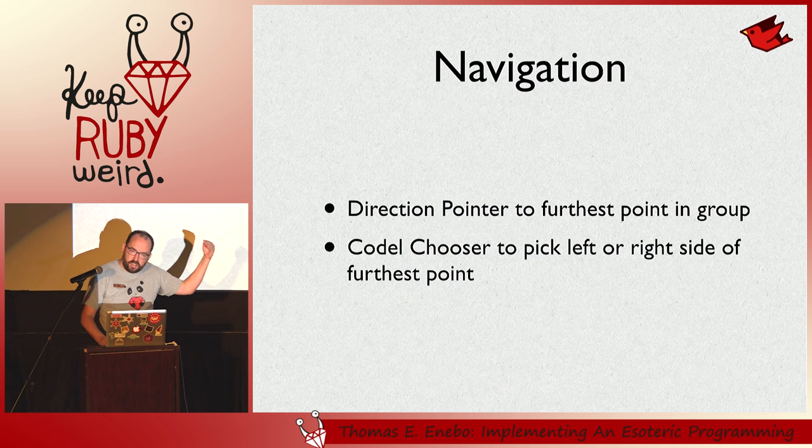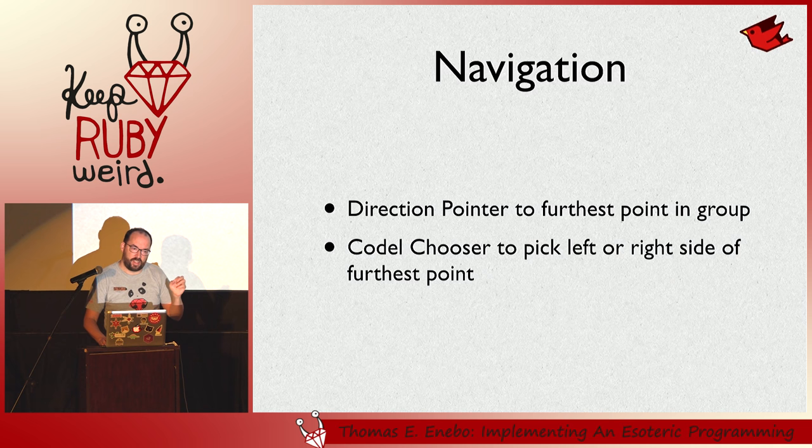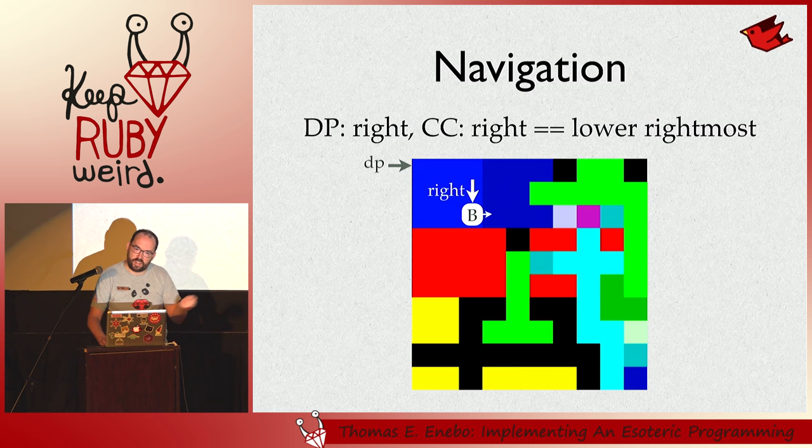Execution is based on this navigation rule. You follow the direction pointer to the furthest extreme of the group, and then depending on whether the codel chooser is left or right, you go to the left or rightmost at that extreme. When we start the program, we enter the normal blue group. The direction pointer is right and the codel chooser is left, so we enter at the top. But if the codel chooser would have been right, then we just enter at the bottom. Pretty simple.